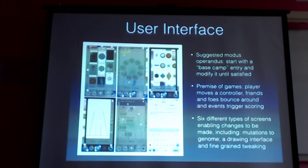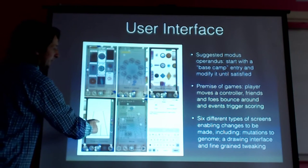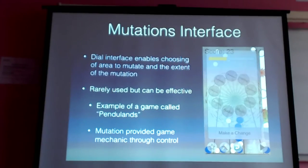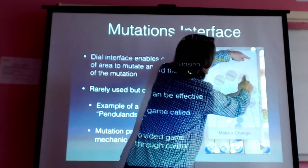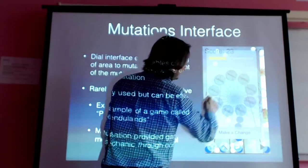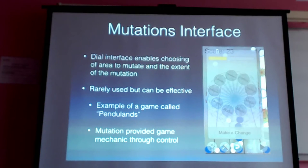Players move a controller or tap things. Friends and foes — two types of boards — bounce around, and certain events trigger scoring which eventually leads to a game end, or a timer runs out. There are six different types of screens, but I'm going to concentrate on the mutation, drawing, and slider screens. Mutations: if you want to change the lighting of your game, you dial around and the more you dial, the more pronounced the mutations become. You've also got interaction, audio, scoring, and background — a nice one-stop mutation screen.